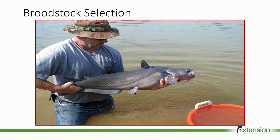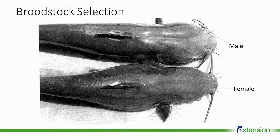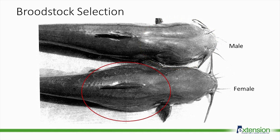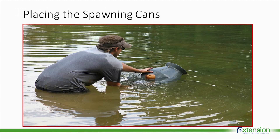One of the keys to successful aquaculture production is the selection of good broodstock. These fish are selected based on traits considered most valuable to the species. These are prime examples of catfish broodstock showing strong secondary sex characteristics. You can see that the male in the top photo has the desired raised muscle pads on the top of his head, and the female has a rounded belly full of eggs.